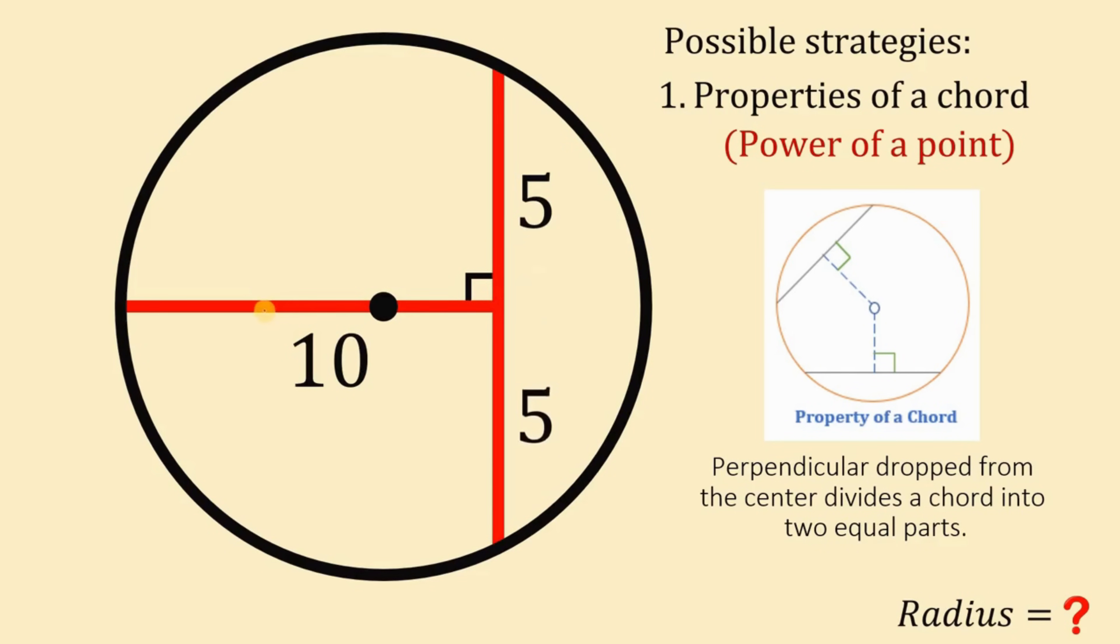Now what we are going to do here is to complete this diameter. Now let's complete this diameter like this. Now we know from this point up to this point, we have 10 units. So let's call the other length as N. Alright, so the diameter of this circle must be equal to 10 plus N. Now at this point, we will use now the power of a point.